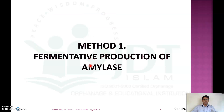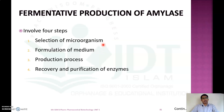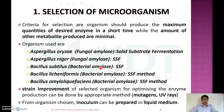The first method is the fermentative production of amylase. This method involves four steps: selection of a suitable microorganism, formulation of culture media containing essential nutrients, a production process with suitable temperature, pH and conditions, and finally the recovery and purification of the enzyme.